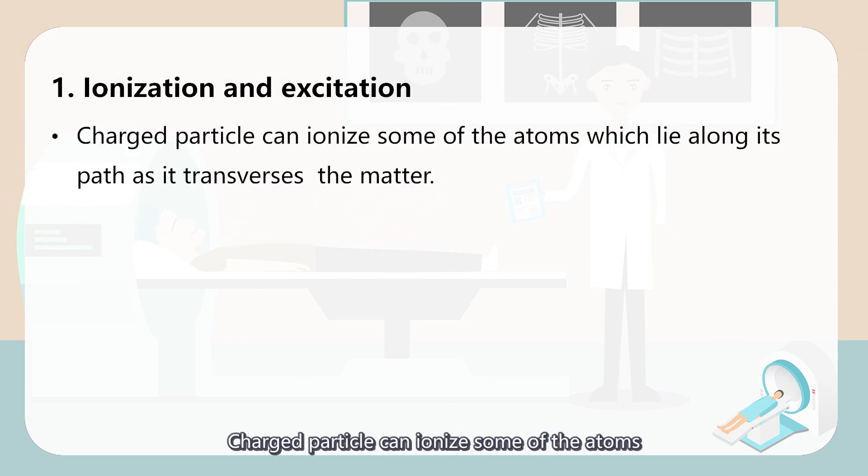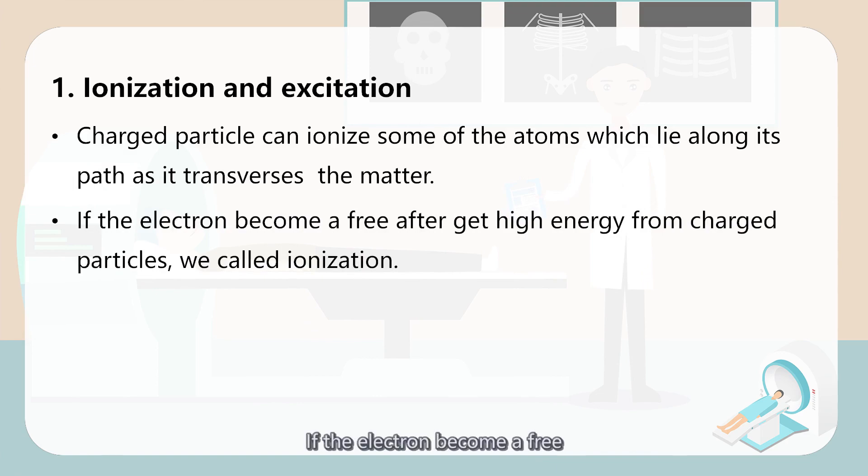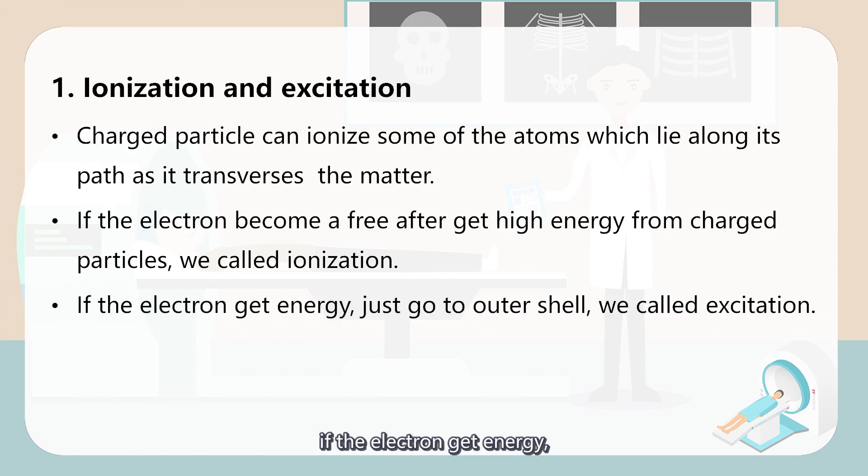Charged particles can ionize some of the atoms which lie along its path as it traverses the matter. If the electrons become free after getting high energy from the charged particles, we call this process ionization. And if the electrons get energy and just go to the outer shell, we call this process excitation.